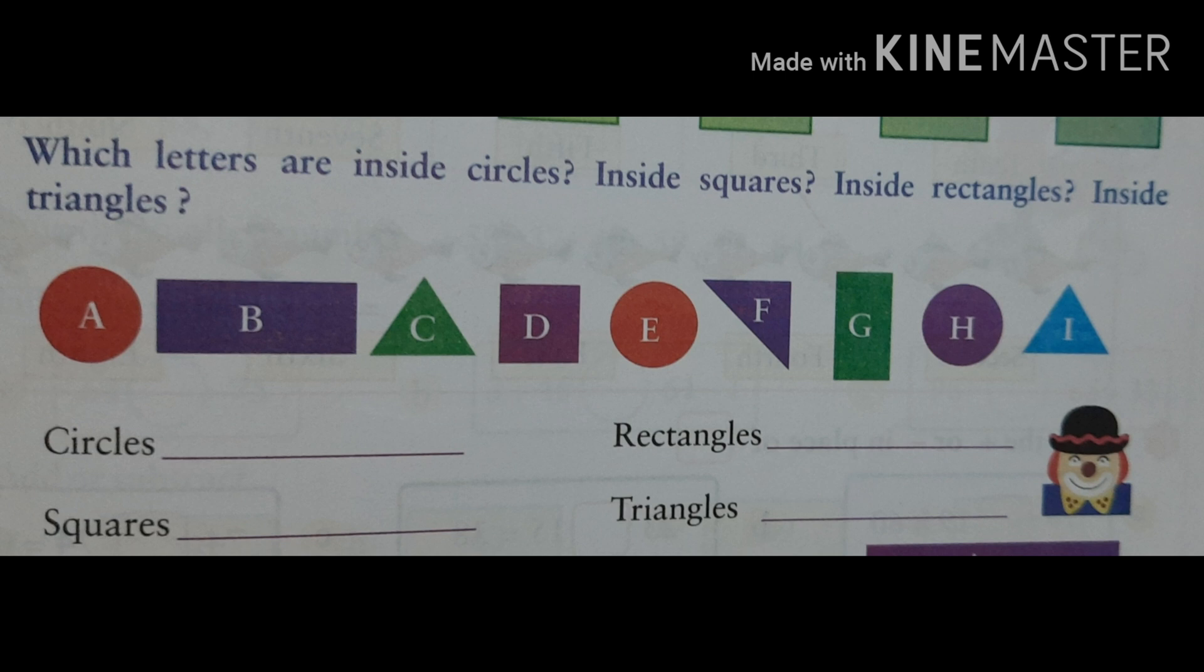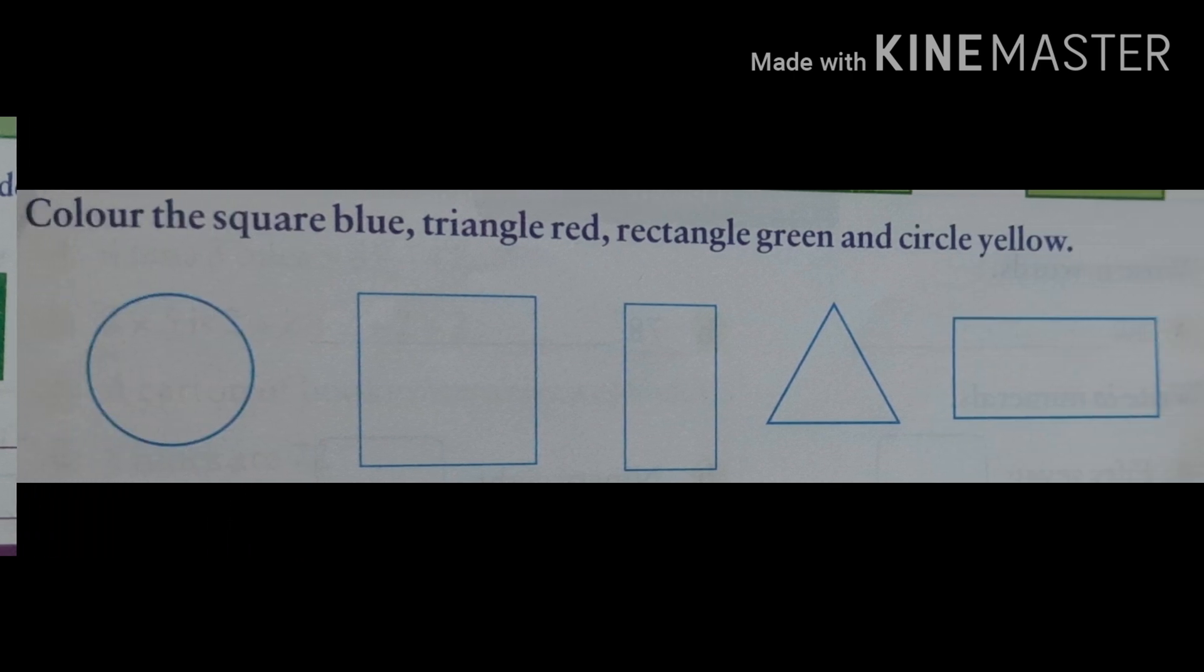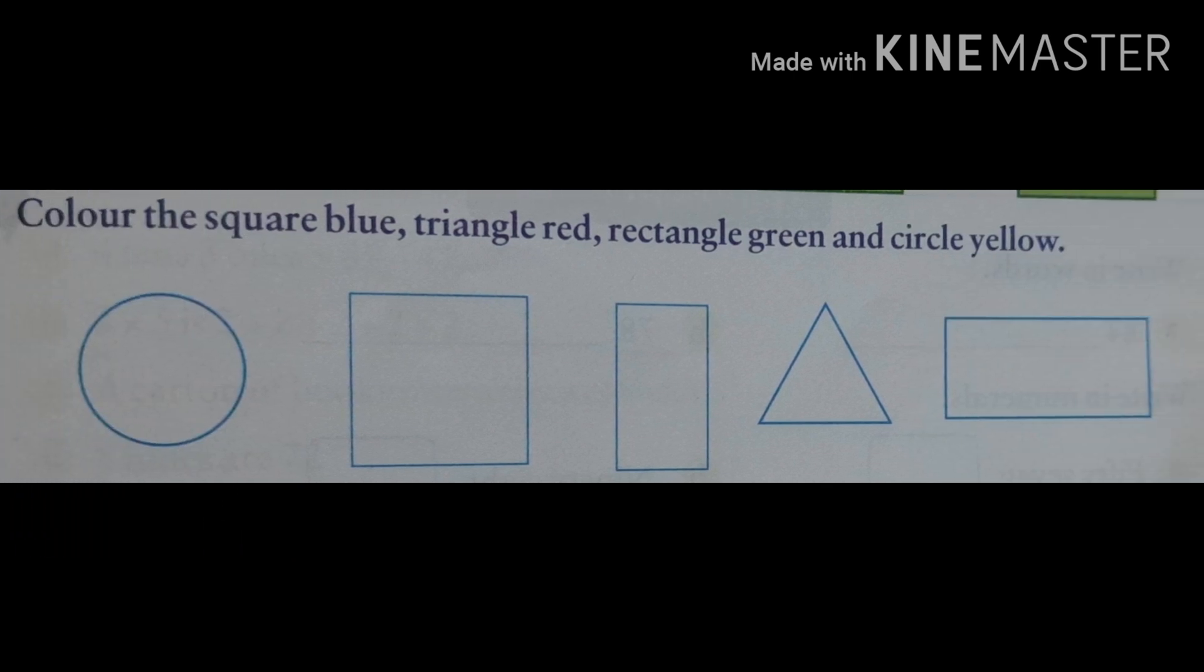Now, next one is very easy but attractive. Color the square blue, triangle red, rectangle green and circle yellow. All these do in your maths copy. Okay?